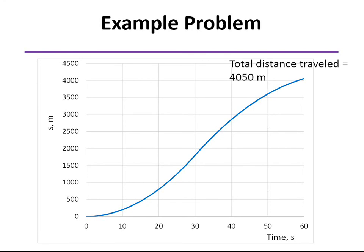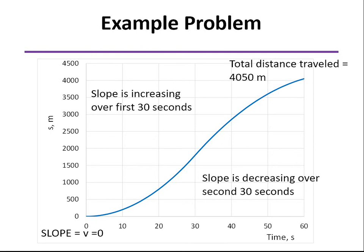And the shape of the curve, if we draw this to scale, you can see we do start out with a velocity of zero. Remember, the slope of this curve is the velocity. So we start out with a slope of zero, indicating a velocity of zero. For the first 30 seconds, you can see the slope is increasing. That's because the velocity is increasing. And over the last 30 seconds, the slope is decreasing.